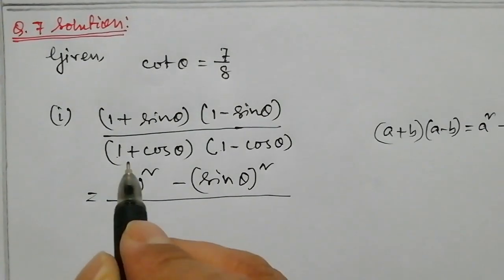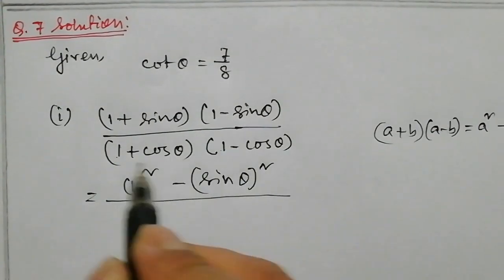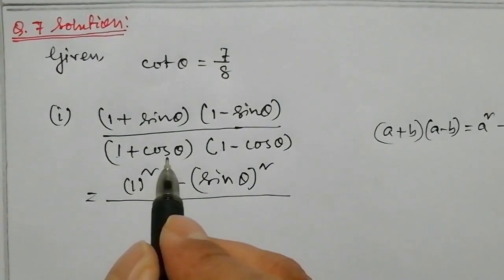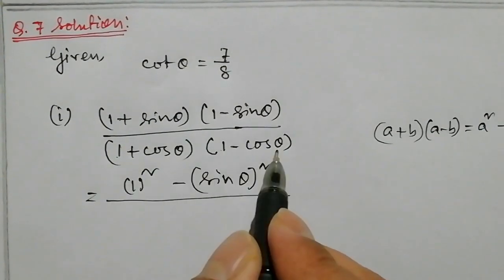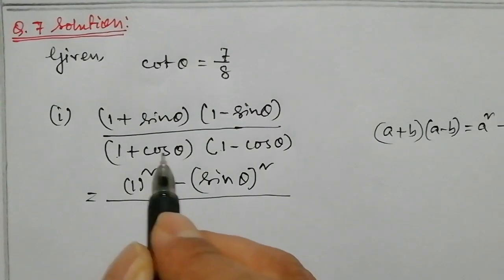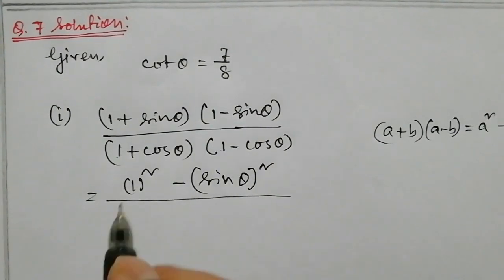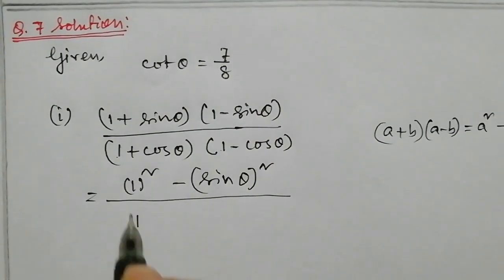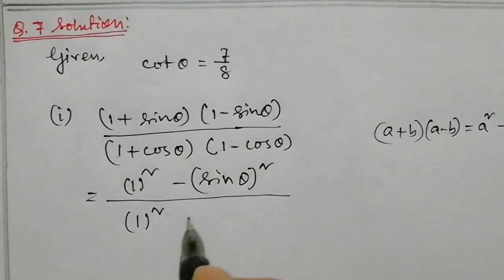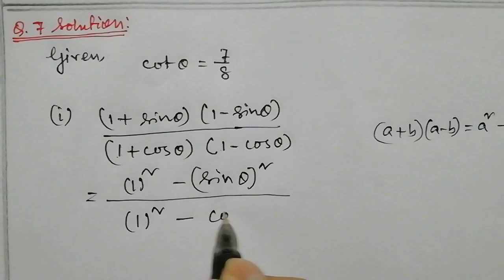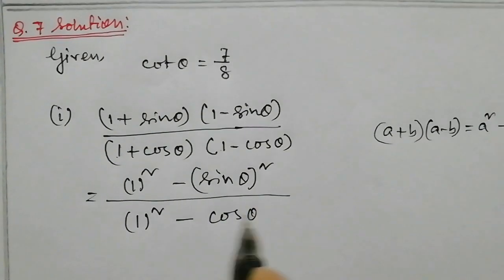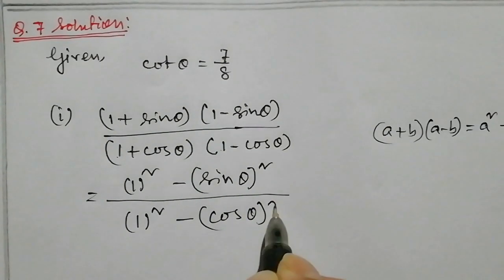Similarly for the denominator: 1 plus cos theta into 1 minus cos theta, using the formula a plus b into a minus b, gives us 1 square minus cos theta square.